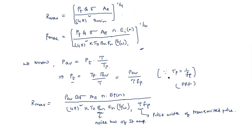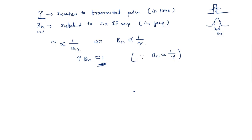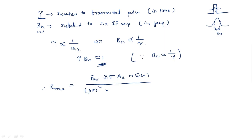Coming to this equation — looking at the denominator, we have both B_n and tau. Since their product equals 1, they cancel out. Therefore, R_max equals P_average G sigma A_e N E_i(N) divided by 4 pi squared k T_0 times B_n tau F_n times signal-to-noise ratio of one pulse times F_p, whole to the power 1 by 4.